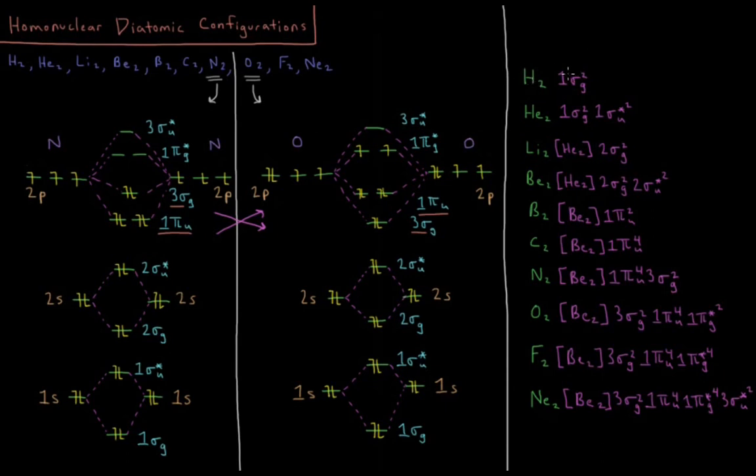For H2, they each have one electron, so there's going to be two total electrons. Those just fill up the 1sσg bonding orbital. The ground state electron configuration of the H2 molecule is 1sσg2.